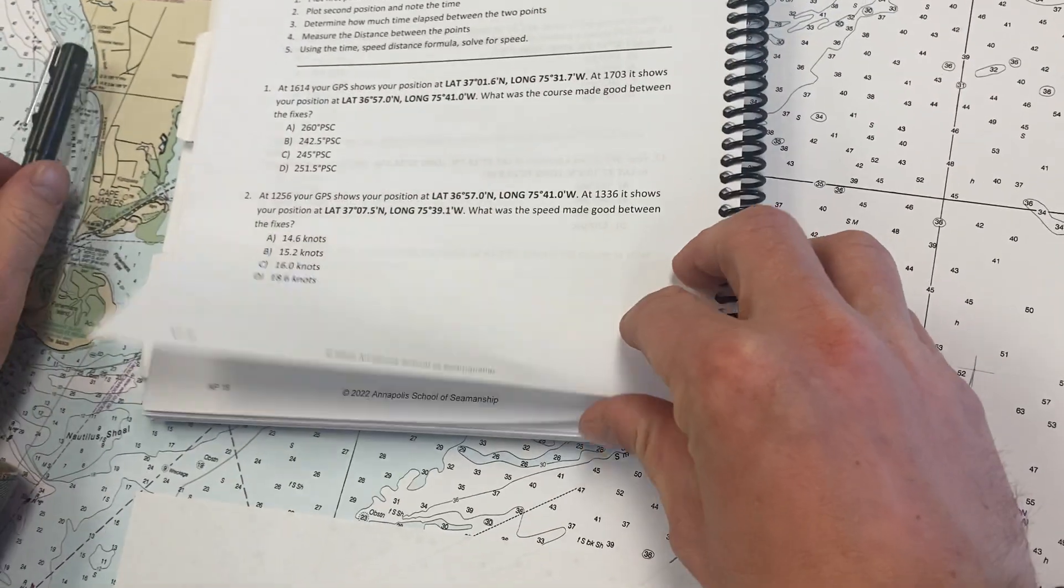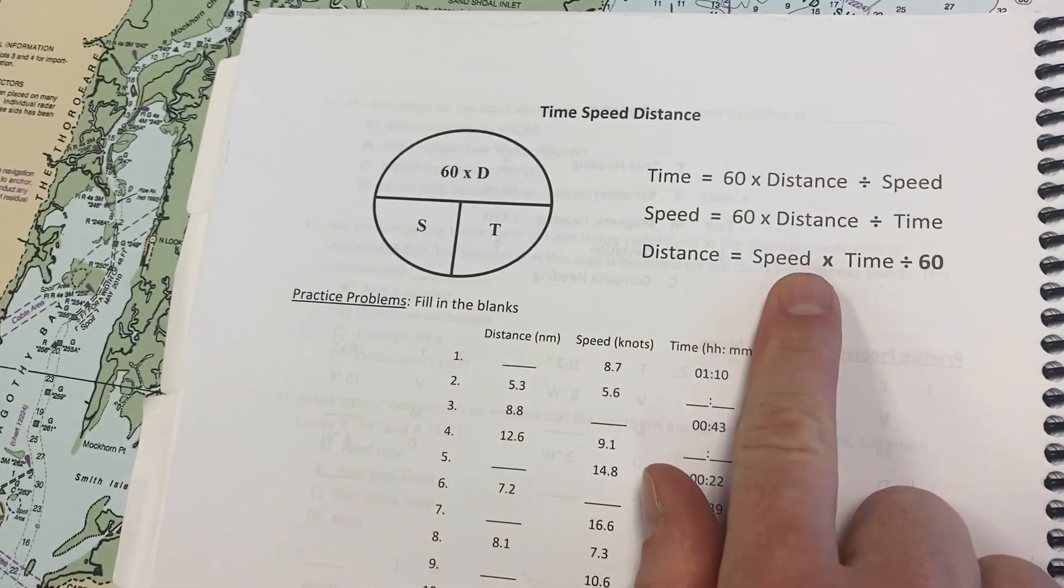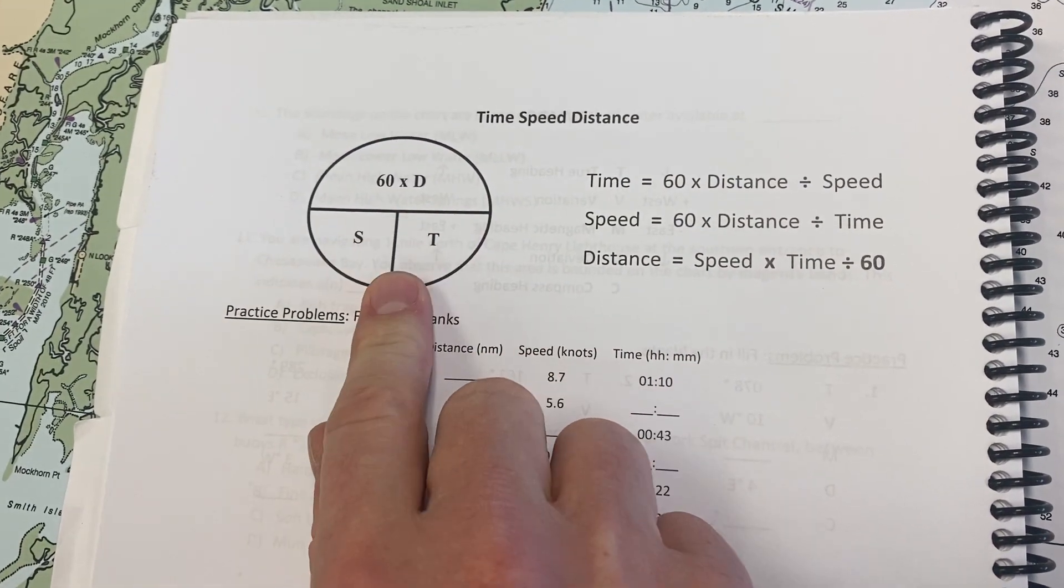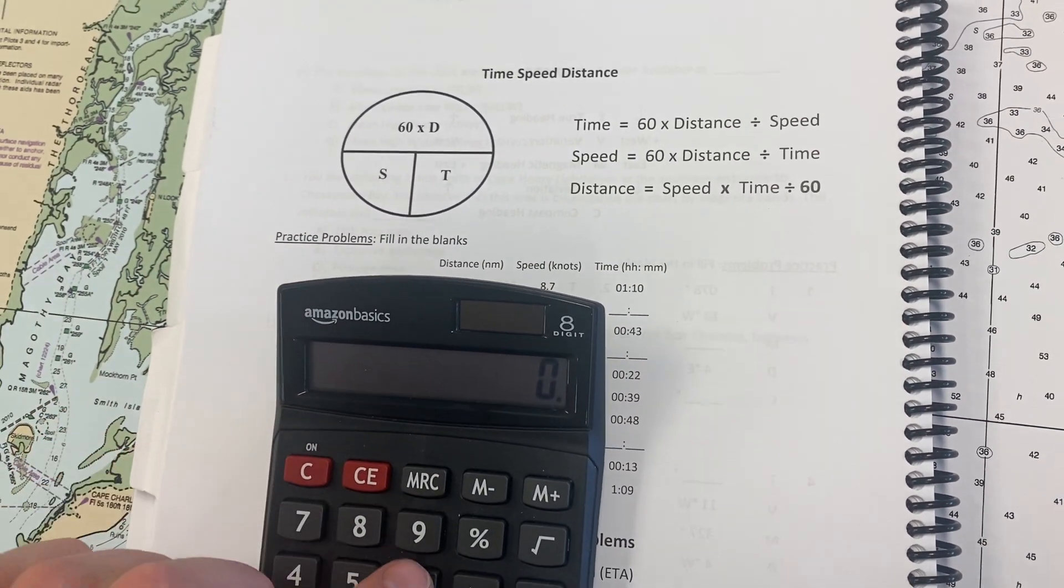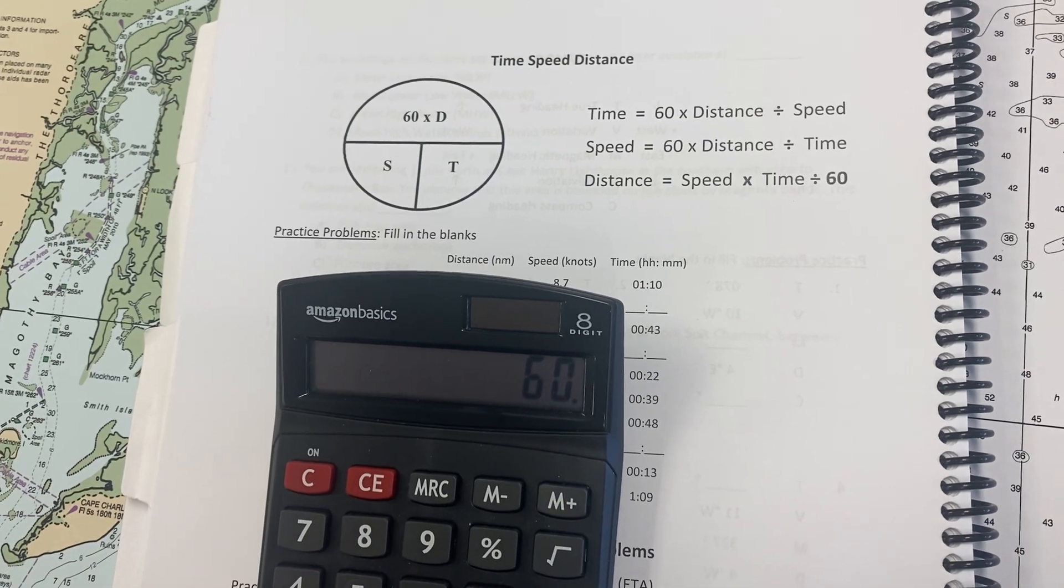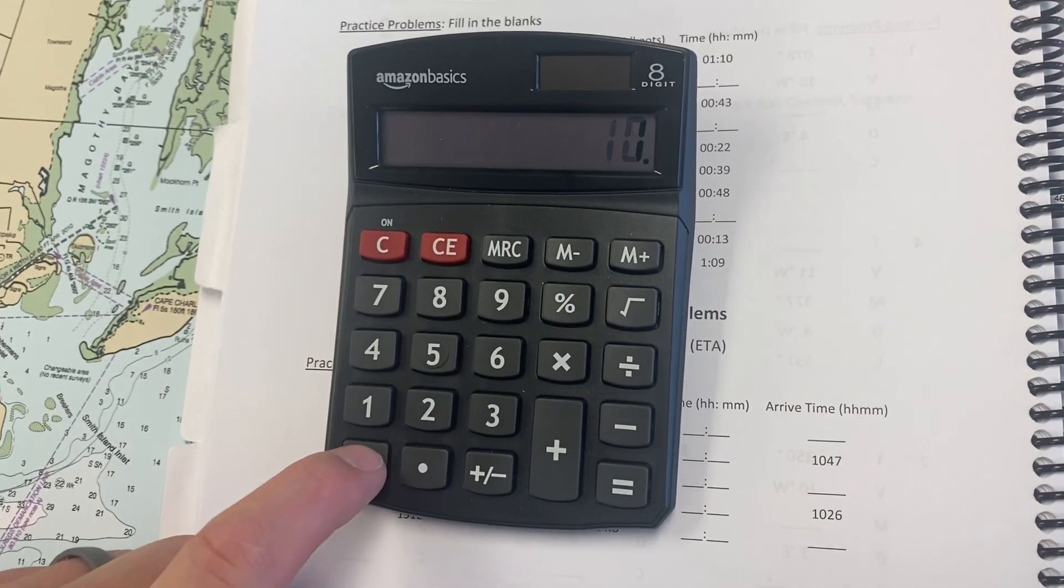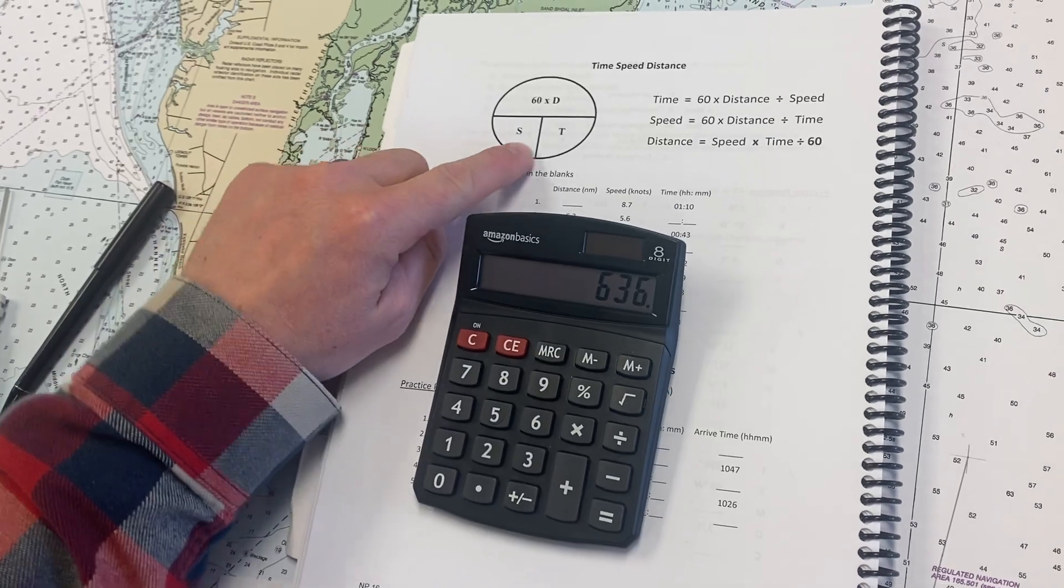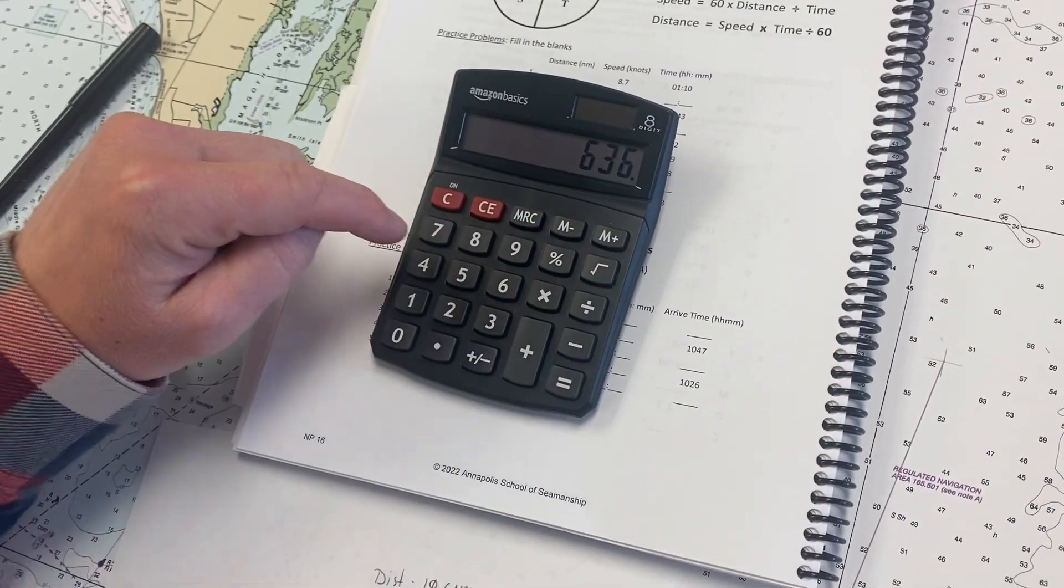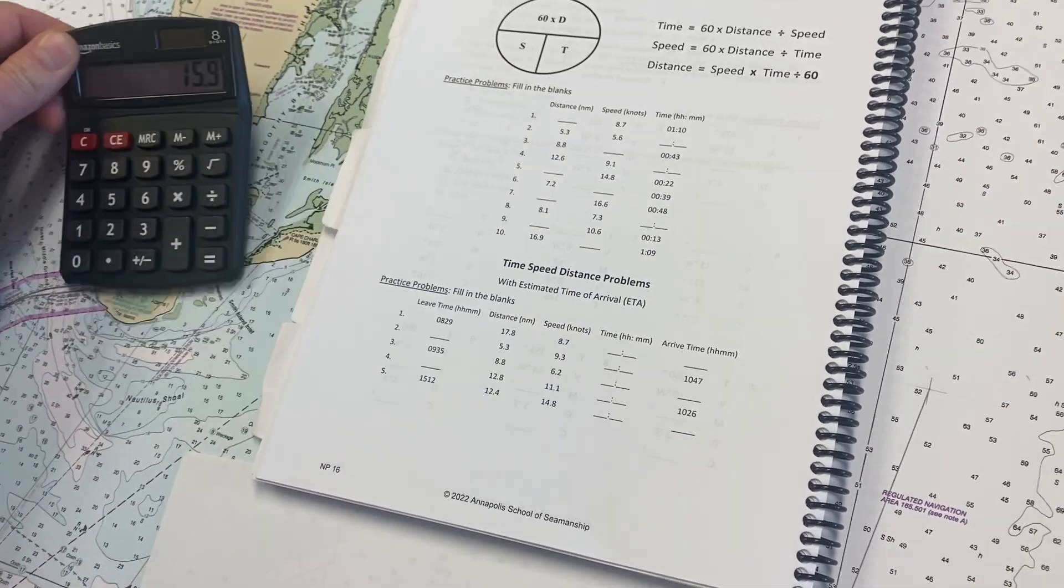Now we've got our data. We can plug this into our 60D street, or our time-speed-distance problems. We have a couple options here. I personally like to go with 60D street. So going with 60D street, I'm going to take 60 times our distance, which is 10.6 nautical miles, divided by our time in minutes, divided by 40 minutes, equals 15.9.